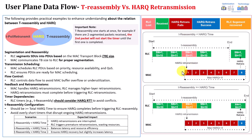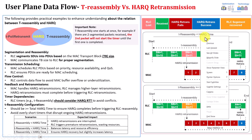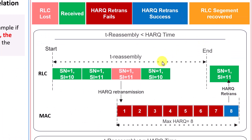In this example I'm giving two cases. The first one assumes T-Reassembly is less than the HARQ time, and the second one assumes T-Reassembly is greater than or equal to the HARQ time. Let's zoom into the first example. I'm dividing this into two parts with a color code on top.